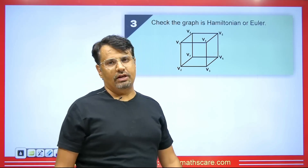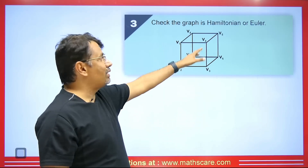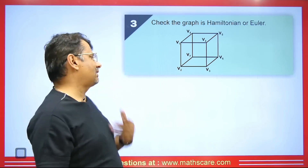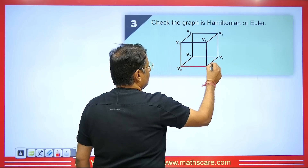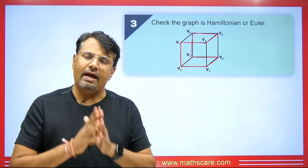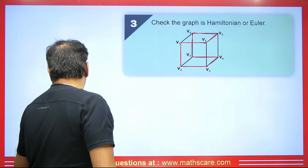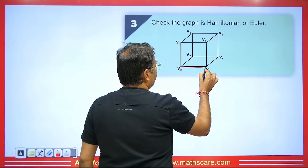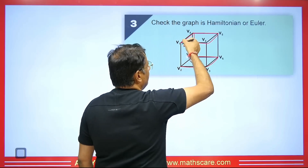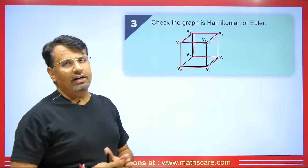Check the graph: is it Hamiltonian or Eulerian? Number of vertices is 8, number of edges is 12 (4+4+4). So it is understood it will be Hamiltonian but not Eulerian. Starting from a vertex and covering all 8 vertices in a closed path — we can see it covers all vertices and is closed — therefore it is a Hamiltonian graph. But when we try to cover all edges, edges will repeat; since we cannot cover all edges and close it without repetition, it will not be Eulerian but it will be Hamiltonian.